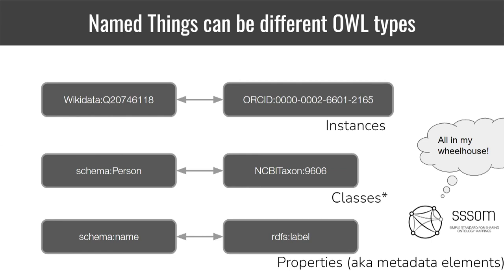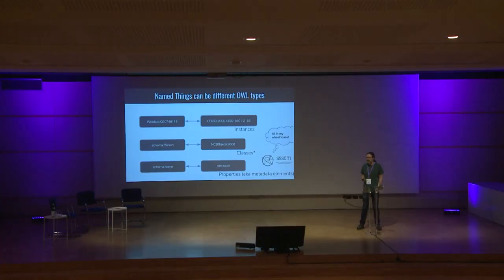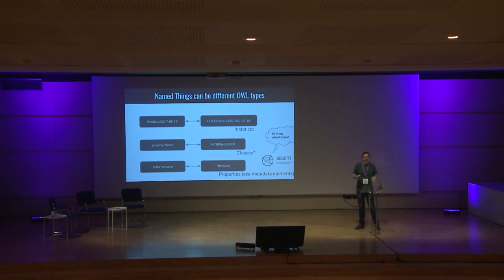SESM doesn't really care what the nature of the things being mapped are. They could be instances — different representations of me as an instance in Wikidata and in ORCID. They could be classes, as most use cases here have been. But they could also be properties, relationship types, or metadata elements. SESM doesn't really care; it's all in SESM's wheelhouse.